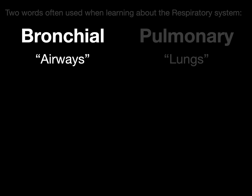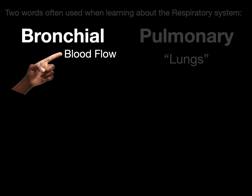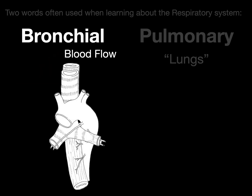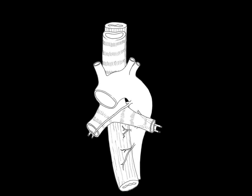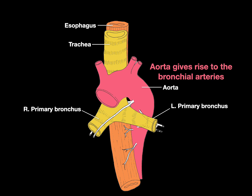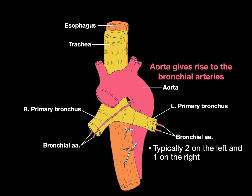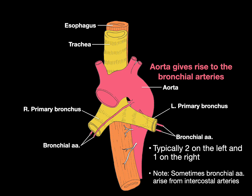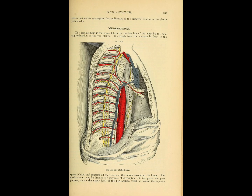Bronchial refers to airways, and bronchial blood flow is the blood supply to those airways. To illustrate this, there's a picture showing the trachea, the right and left primary bronchi, and the esophagus behind the trachea. The aorta gives rise to the bronchial arteries — typically two on the left and one on the right. Sometimes bronchial arteries arise from the intercostal artery.